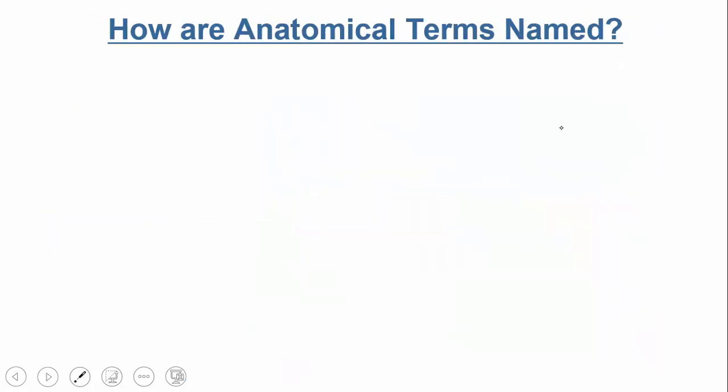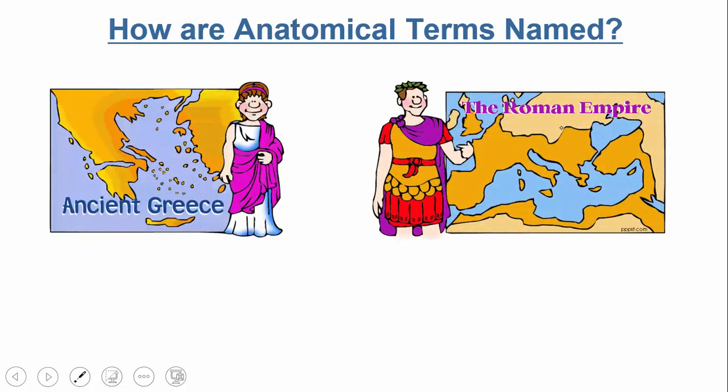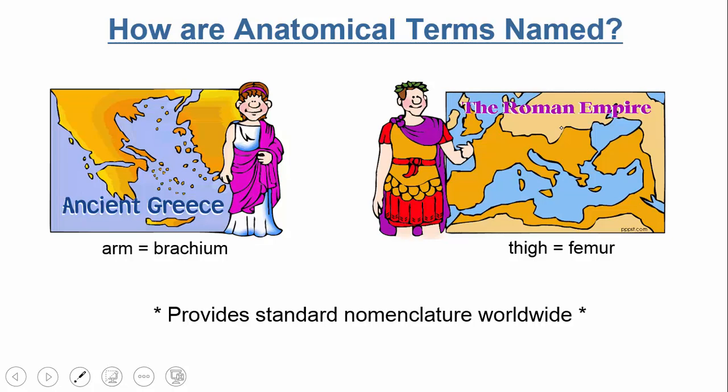Anatomical terms are named from ancient Greek or Latin. For example, 'arm' comes from the word 'brachium' in Greek, and 'thigh' comes from 'femur' in Latin. It's really important that we use these terms because we need a standard nomenclature worldwide, so that physicians from any country can communicate precisely about what part of the body they're discussing.